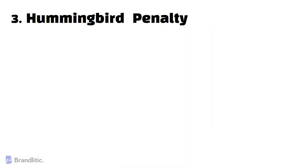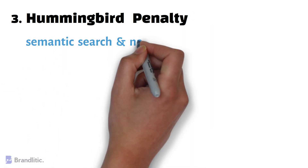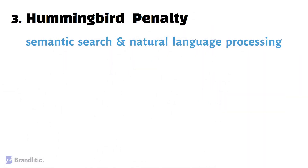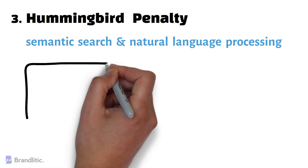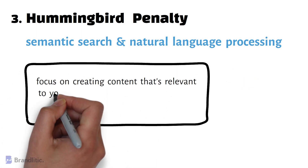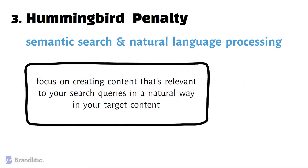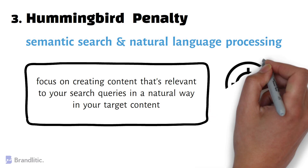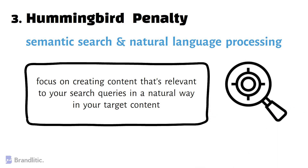The Hummingbird Penalty focuses on semantic search and natural language processing. In order to avoid a Hummingbird penalty, you need to focus on creating content that's relevant to your users' search queries and that answers their questions in a natural way.